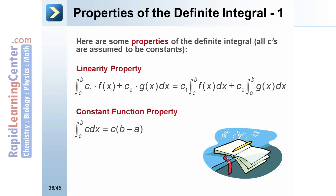The integral from a to b of c is equal to c times (b minus a). The integral from a to a of f of x is equal to 0.